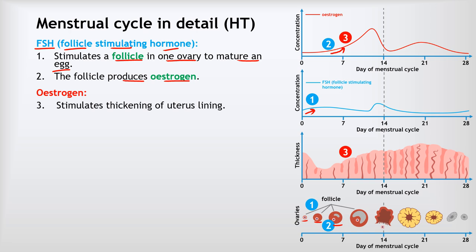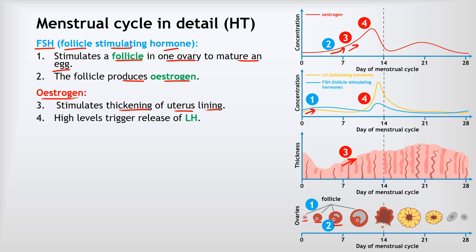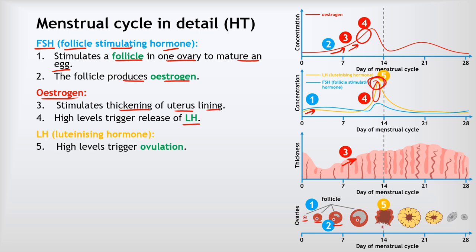Oestrogen is responsible for stimulating the thickening of the uterus lining, as we saw on the previous slide. As oestrogen increases, the uterus lining starts to get thicker. Oestrogen also triggers the release of a third hormone called LH, which stands for luteinizing hormone. As the concentration of oestrogen gets pretty high, that triggers the release of luteinizing hormone — we get this big spike of LH. Luteinizing hormone's one and only job is to trigger ovulation, the release of an egg; you can see the follicle burst open and release that egg.